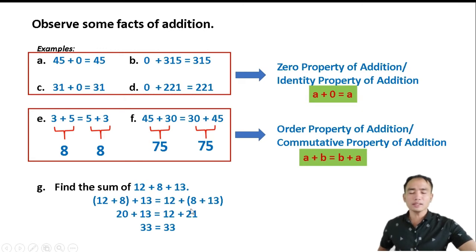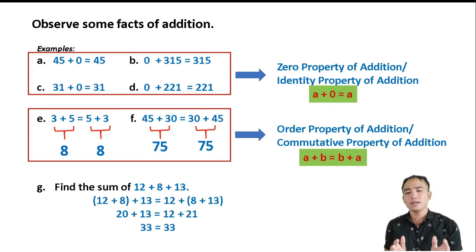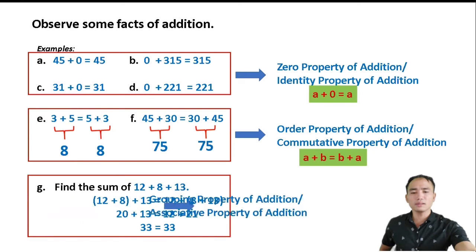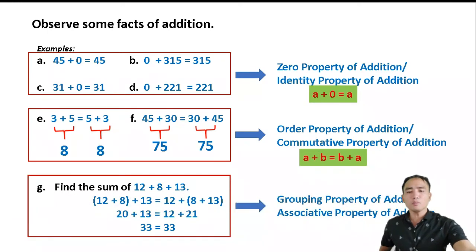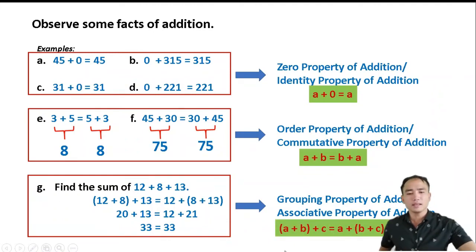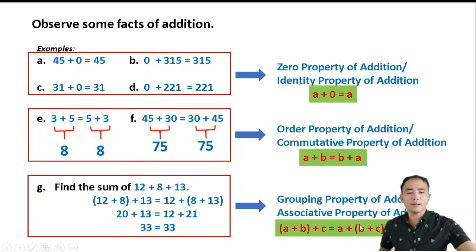The concept here is that the grouping will not affect or change the answer. This property is called the Grouping Property of Addition, or the Associative Property of Addition. It is written as (a plus b) plus c equals a plus (b plus c).